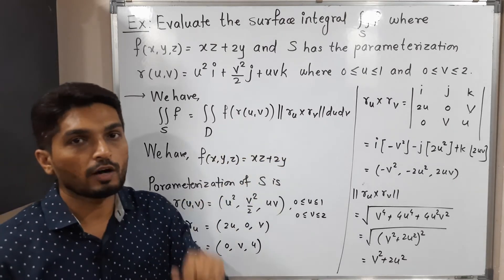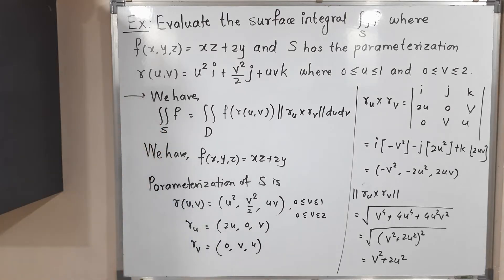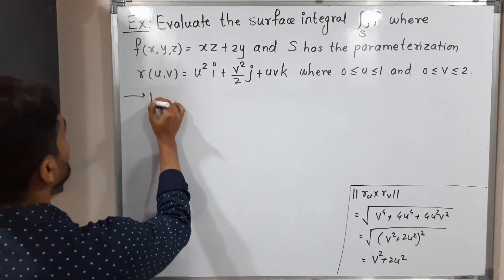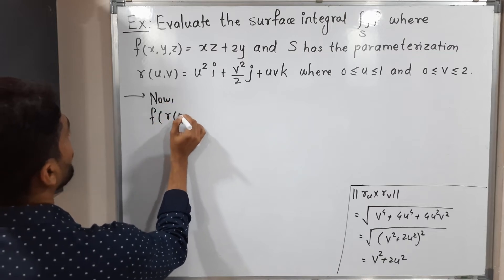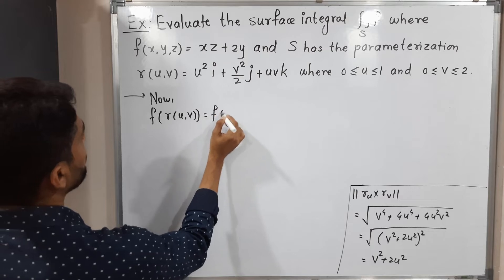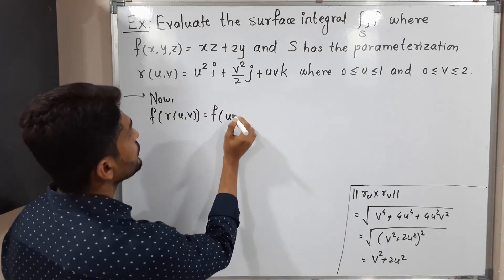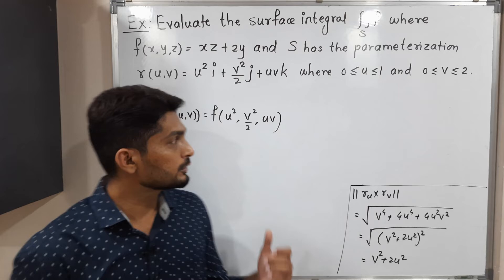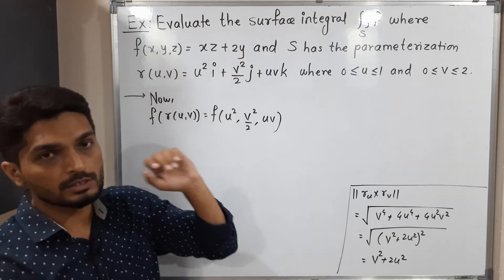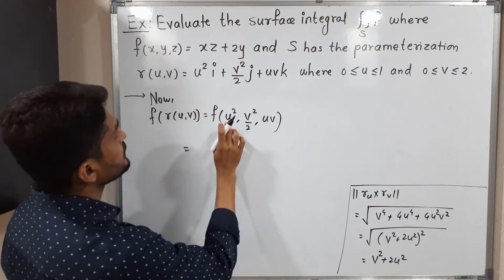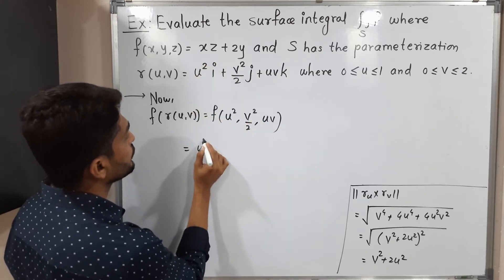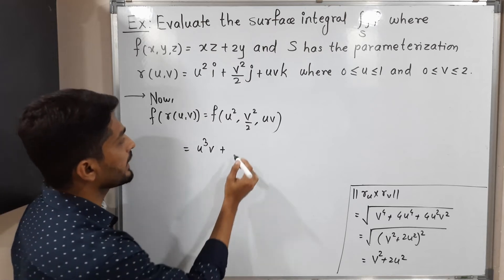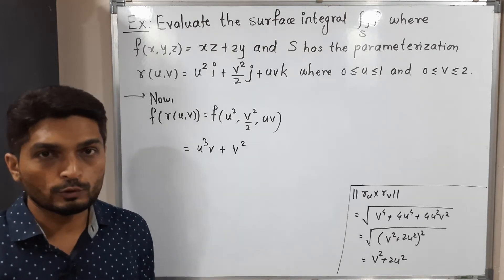Now we find f(r(u,v)). Substituting r(u,v) = (u², v²/2, uv) into f(x,y,z) = xz + 2y: x times z gives u²·uv = u³v, and 2y gives 2·(v²/2) = v². So f(r(u,v)) = u³v + v².